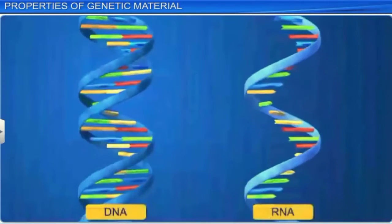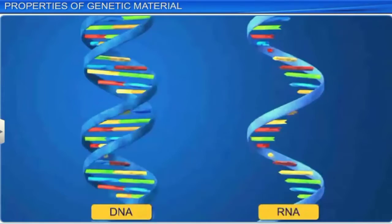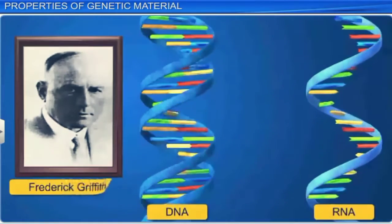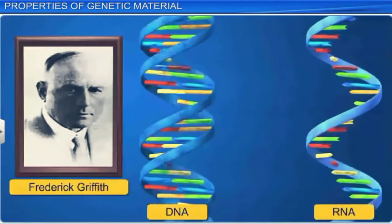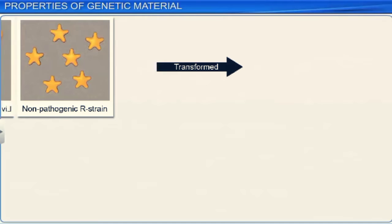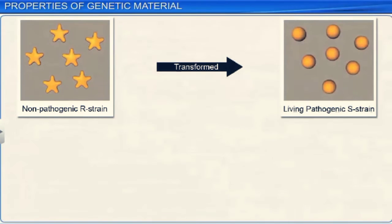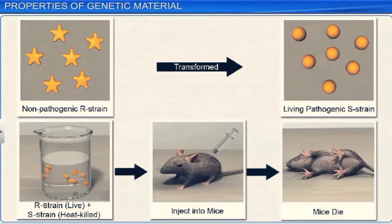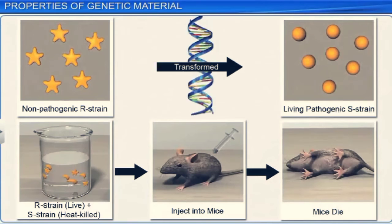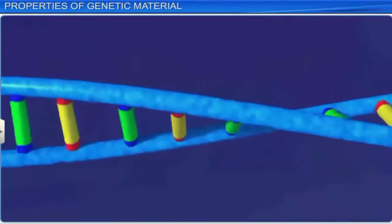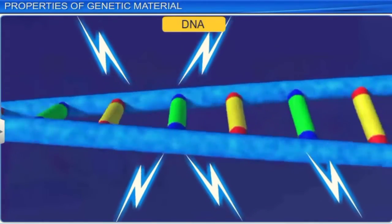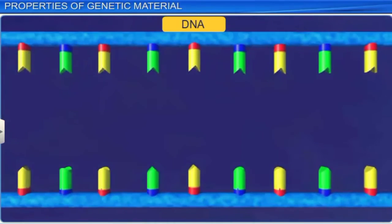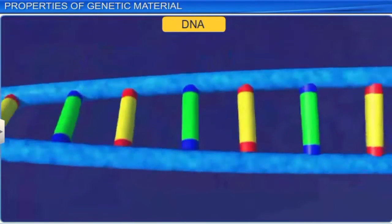Of the two nucleic acids, it was DNA that played a part in Frederick Griffith's experiment, where R-strain bacteria had been transformed to living S-strain. However, though the transformation killed the mice, it had not changed the properties of the DNA. This can be explained by the stable structure of DNA, which although being separated due to exposure to heat, can come together under suitable conditions even after.